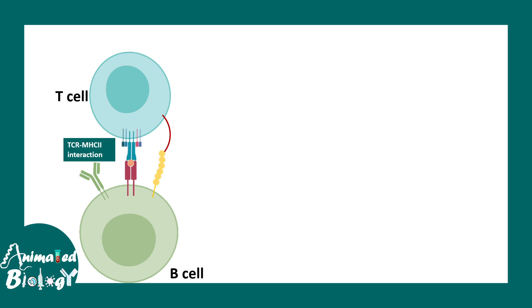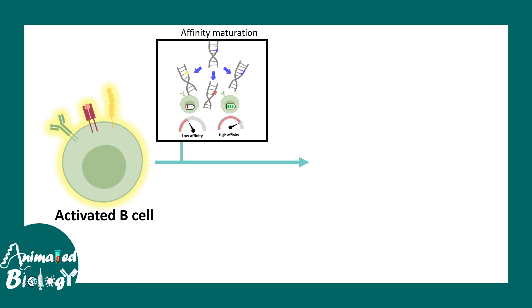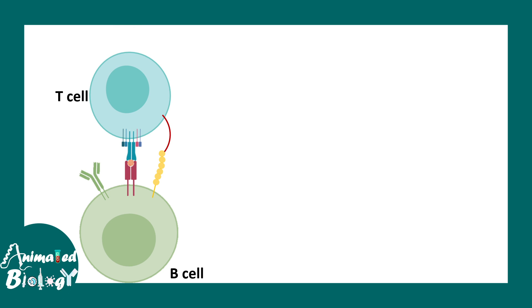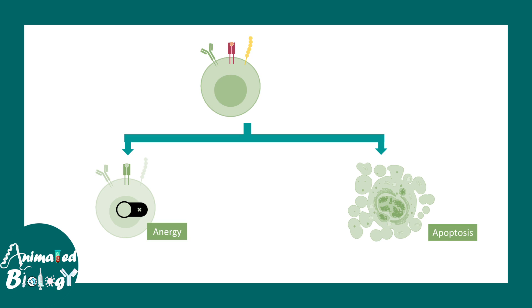Just like T-cells, B-cells can also be autoreactive. B-cell activation happens in the lymph node, requiring two dedicated signals. Once activated, B-cells can clonally expand, undergo affinity maturation and class switching, differentiating into antibody-secreting plasma cells. If those antibodies were autoreactive, that would be detrimental. When autoreactive T-cells are eliminated, B-cells cannot receive the help needed for activation. B-cells can also undergo anergy or apoptosis. However, if cells escape both central and peripheral tolerance, this leads to autoimmune disorders — making failure of both tolerance mechanisms the key cause of autoimmunity.